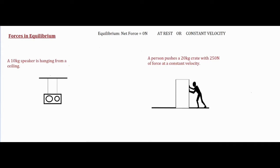A quick and easy definition for equilibrium is something where the net force equals zero newtons. The net force is the total of all the forces acting on an object. Zero newtons indicates that all of your forces are basically canceling each other out, or there's possibly no forces acting on it at all. When that's the case, one possibility is that if the object is already at rest and the net force is zero newtons, then it is going to remain at rest. That is the first case of equilibrium.